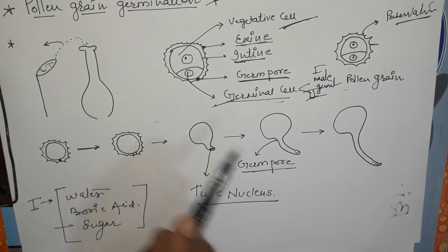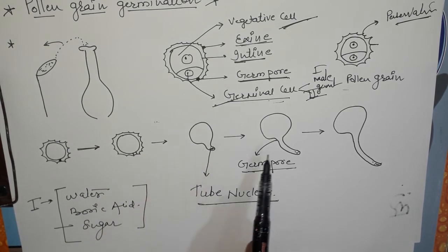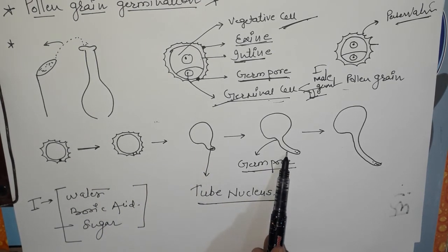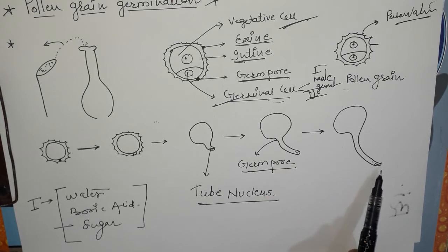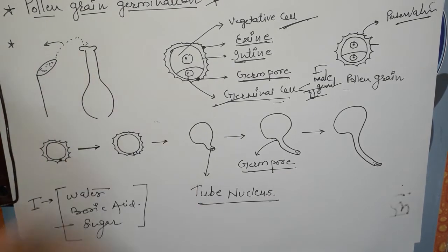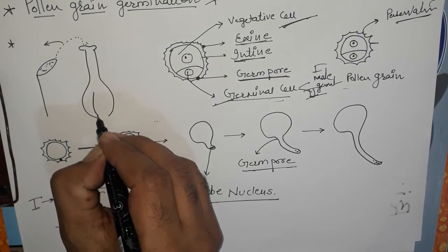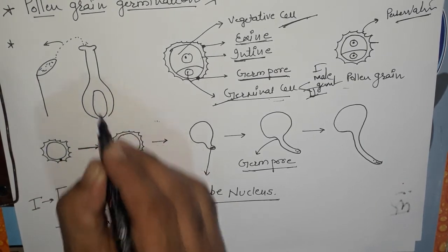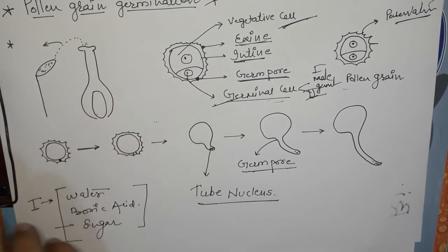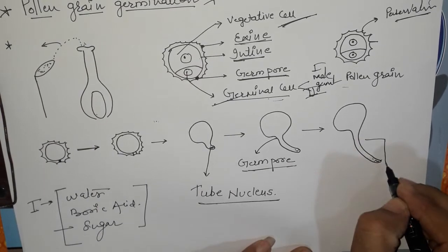After the formation of the pollen tube, it progresses from a short size, then a middle size, and then a long size. These sizes depend on the size of the style and then the distance to the embryo sac. That is the pollen tube.